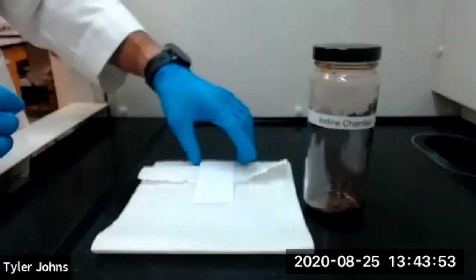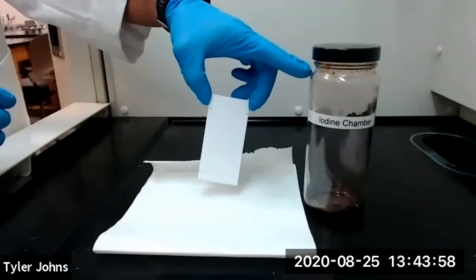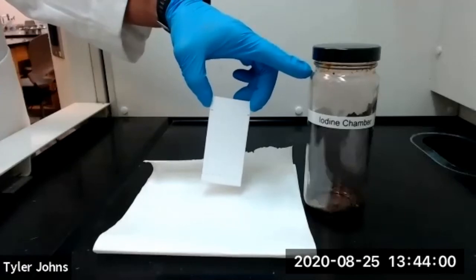Once our TLC plate has completely dried, we'll place it in an iodine chamber until the spots begin to appear.